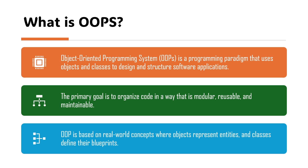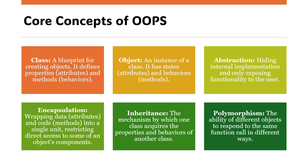And classes define their blueprints. So let's see what are the core concepts of OOP. The first concept is class — a class is a blueprint for creating objects. It defines properties, nothing but attributes, and methods, nothing but behaviors. The second core concept is object — an object is an instance of a class. It has states, attributes, and behaviors.